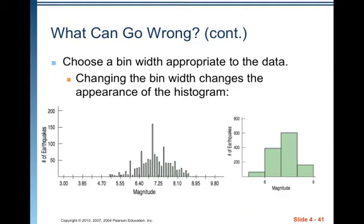Choose a bin width appropriate to the data. Changing the bin width changes the appearance of the histogram. You don't want a bunch of super skinny bars — it can make it too crowded to see the overall picture. You want a nice number of bars with a reasonable width so that you can get an overall feel for what's going on.